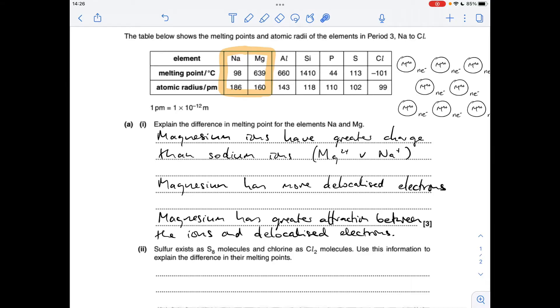It's all to do with the strength of the metallic bond, which is the electrostatic attraction between a positive metal ion and a delocalized electron. I've got this generic diagram here for metallic bonding to help explain the answer. Magnesium ions have a greater charge than sodium ions, so magnesium ions are 2+, whereas sodium ions are only 1+.